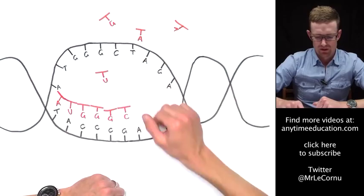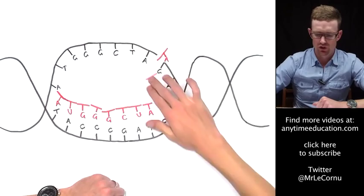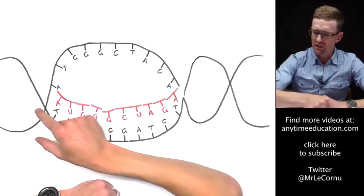Another C, another G. The G is going to need a C, this A is going to pair up with a U, T will pair up with an A, C and G, and our final T will pair up with an A.